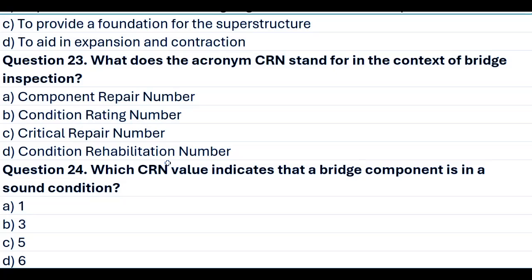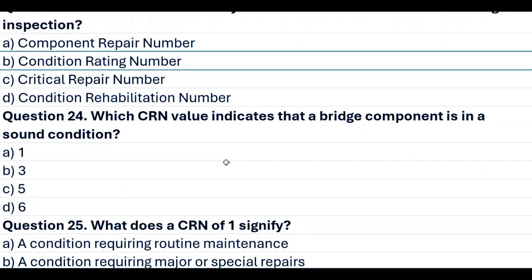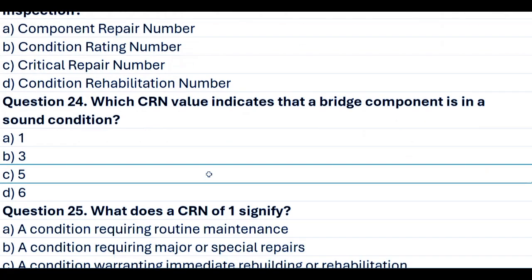Question 24. Which CRN value indicates that a bridge component is in a sound condition? A. 1. B. 3. C. 5. D. 6. Answer C. 5.